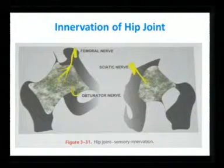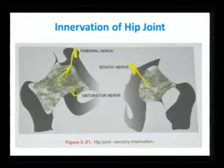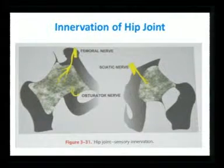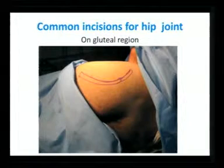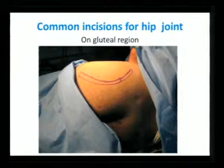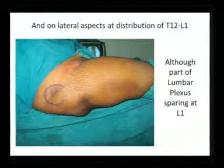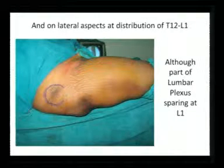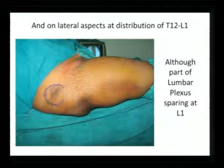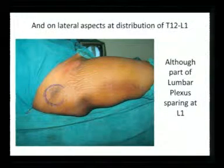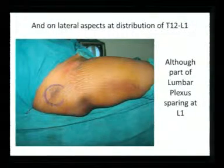Not only these structures but the hip joint itself is supplied by the femoral, sciatic, and obturator nerves. The message is that it is not only supplied by the femoral nerve — there is a sciatic component. The common incisions on the gluteal region are at the site of innervation of the sacral plexus. The region of L1 distribution is spared even if we give a lumbar plexus block, so we should be aware of this.